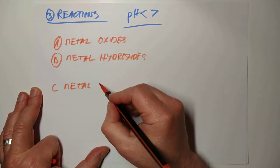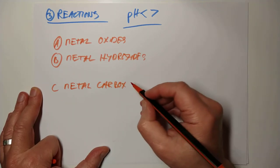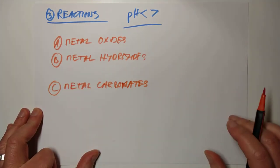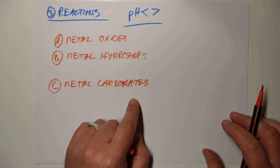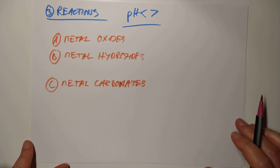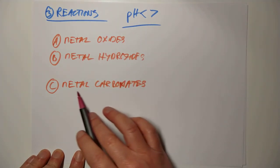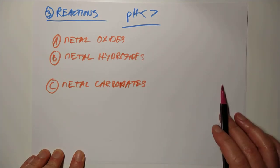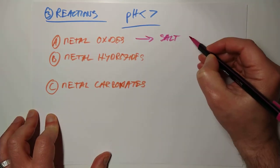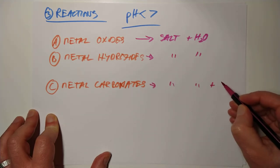Those are the three things carboxylic acids will react with. The SQA don't actually want you to know that they can also react with the fourth category of base, which is ammonia. Metal oxides and hydroxides react with an acid to make a salt and water. Metal carbonates react with an acid to make a salt, water, and carbon dioxide gas. It's precisely the same for carboxylic acids.